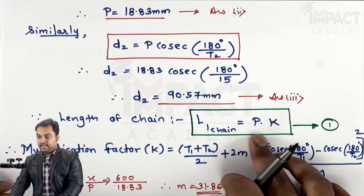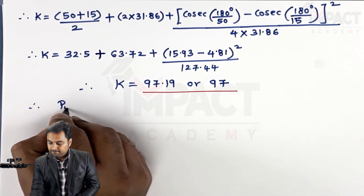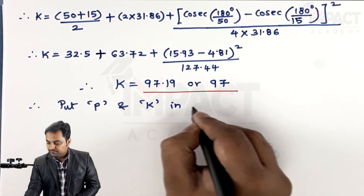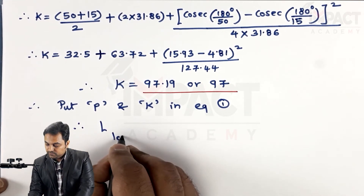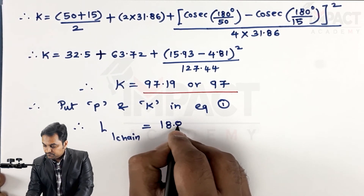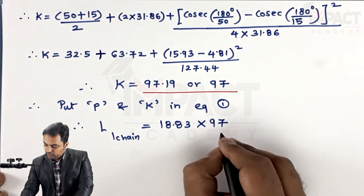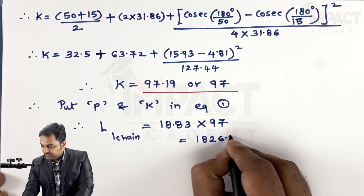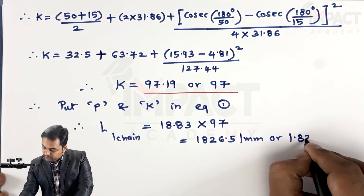With k = 97, substituting both pitch and k into the length of chain equation: length = p × k = 18.83 × 97 = 1826.51 mm, or approximately 1.826 meters. That is the fourth answer.